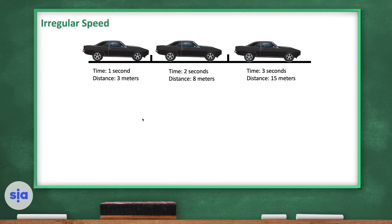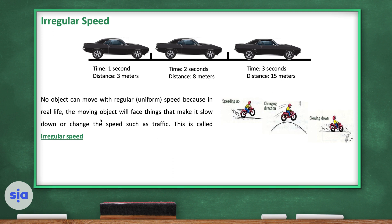Now, irregular speed: this car covers 3 meters in 1 second, 8 meters in 2 seconds, and 15 meters in the third second. No object can move with regular uniform speed all the time, because in real life the moving object will face things that make it slow down or change speed — such as traffic. This is called irregular speed.